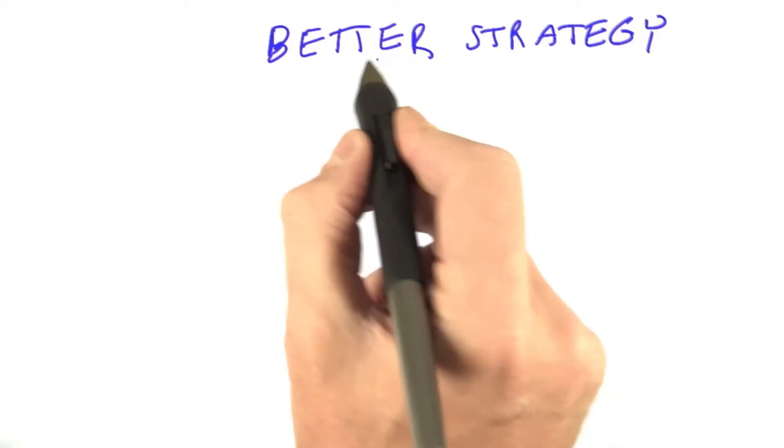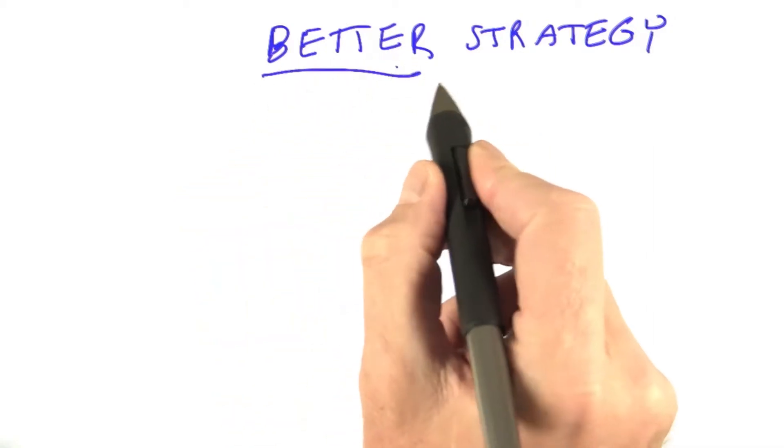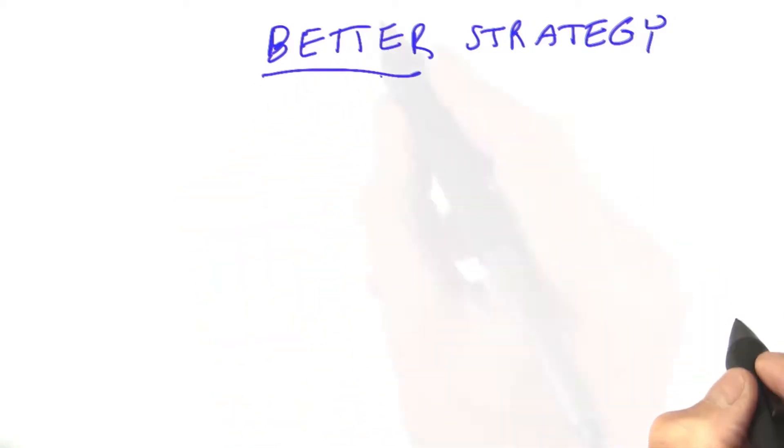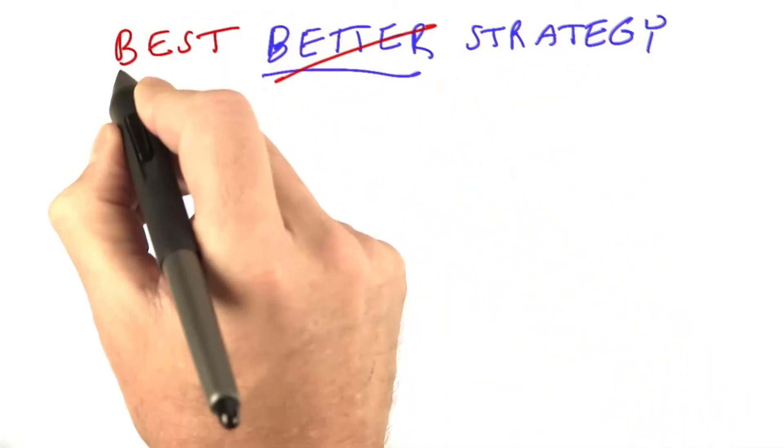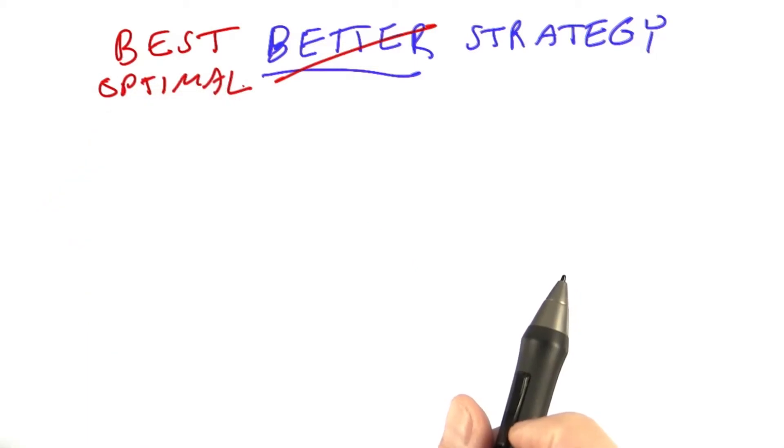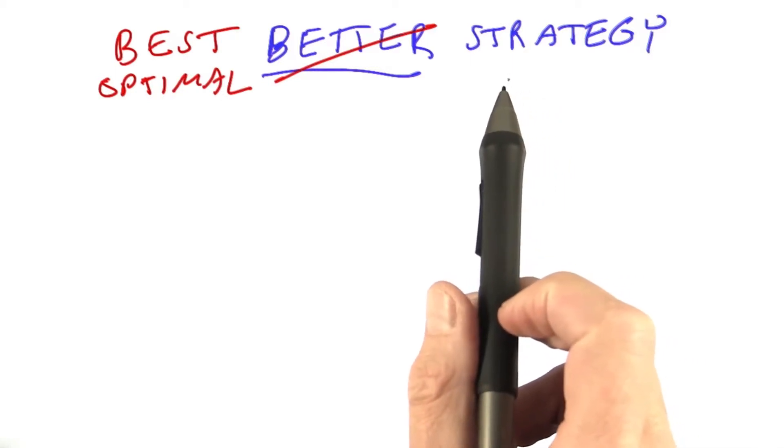But what if we could make a leap? Instead of incrementally coming up with a slightly better strategy, would it be possible to leap to the best strategy? To make it sound more mathematical, we can call it the optimal strategy. Can we do that, and what would it even mean? On the surface, it's not exactly clear.